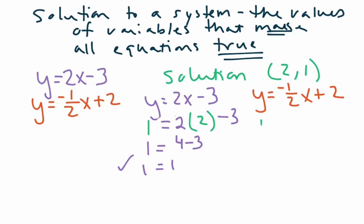So I take y is equal to 1. And then we have negative 1 half. And we're going to plug in the 2. And then negative 1 half times 2 is negative 1. And negative 1 plus 2 is 1. And you can see that it works for both. So it meets that definition. So what's the key idea? What do we need to take away from this lesson?